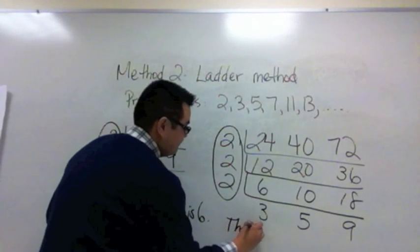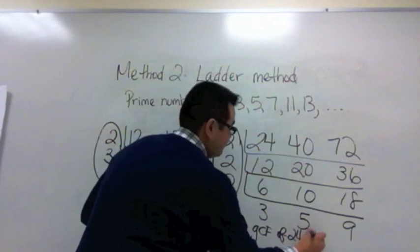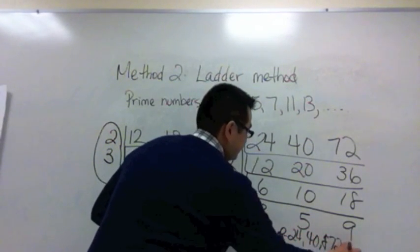So therefore the GCF of 24, 40, and 72 is 8.